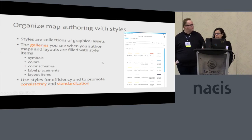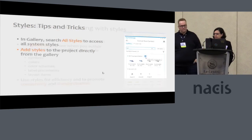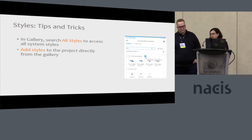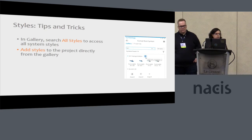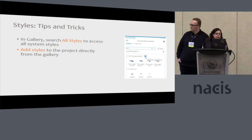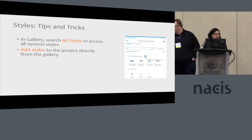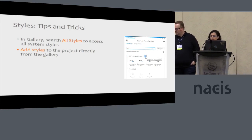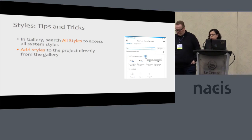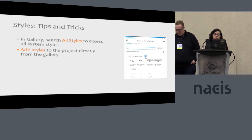Styles are sort of optional — you're not forced to use them, but it's a good way to keep your work organized. There's a notion of system styles in ArcGIS Pro: those are the styles included with the install. We're always looking to increase what we have there balanced with the size of the download. Project styles are the styles that are linked to your project, and if you share your project those styles will go with it — a good way to coordinate with colleagues.